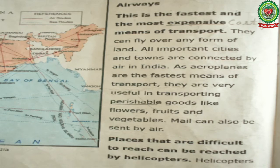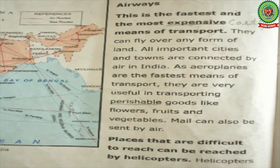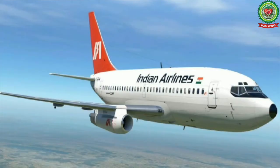Let's start reading from the book. Airways is the fastest and most expensive means of transport. Aeroplanes can fly over any form of land. All important cities and towns are connected by air in India. As aeroplanes are the fastest means of transport, they are very useful in transporting perishable goods like flowers, fruits, and vegetables. Mail can also be sent by air. Underline 'expensive' and write 'costly'; underline 'perishable goods' — meaning goods that spoil easily.